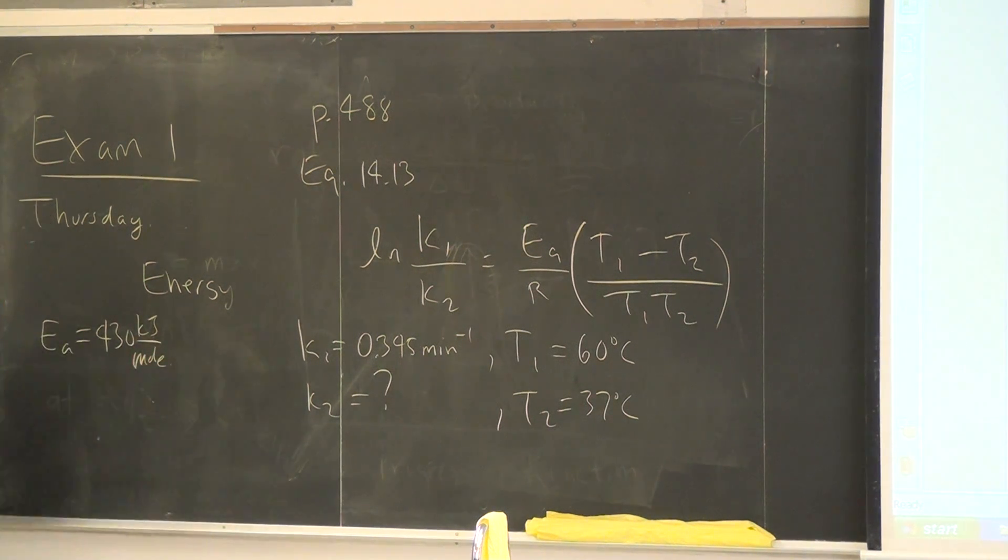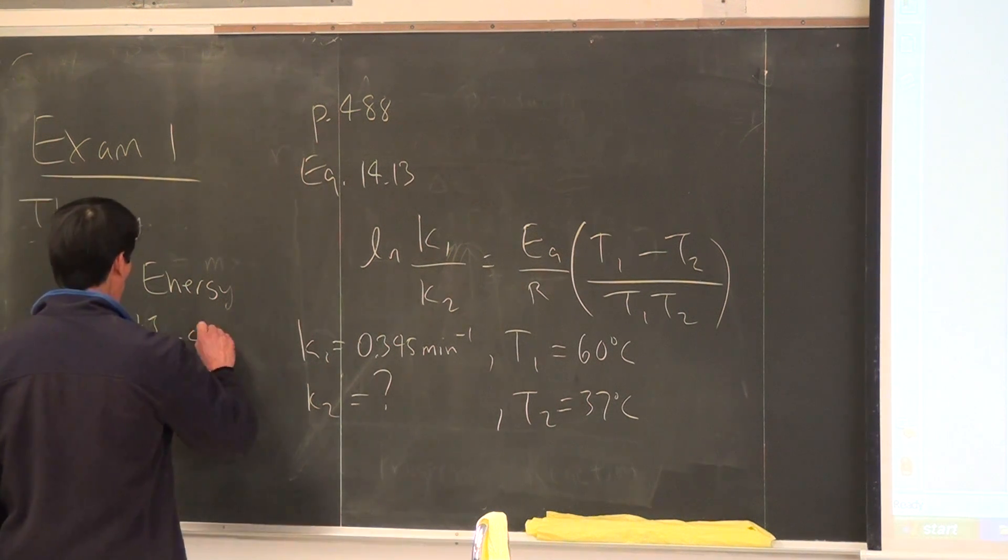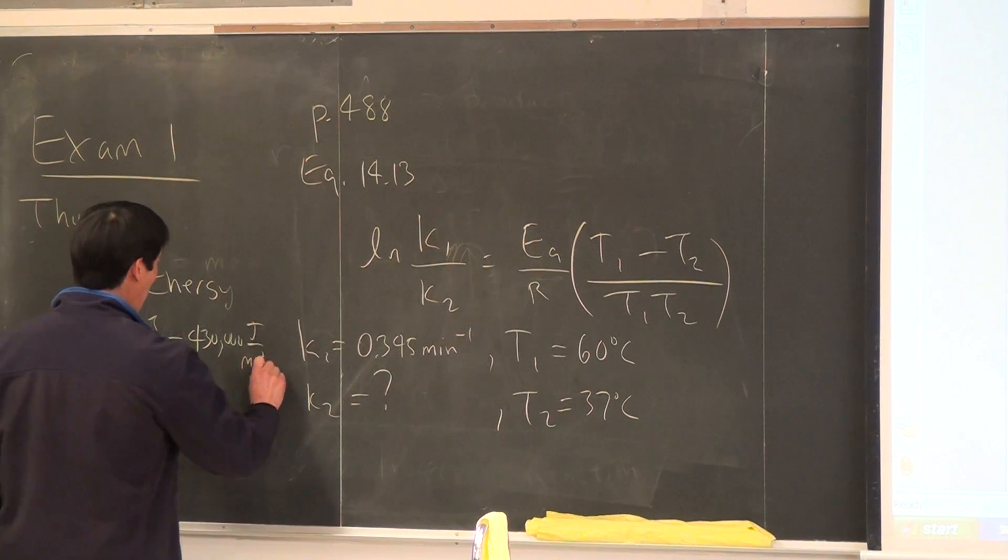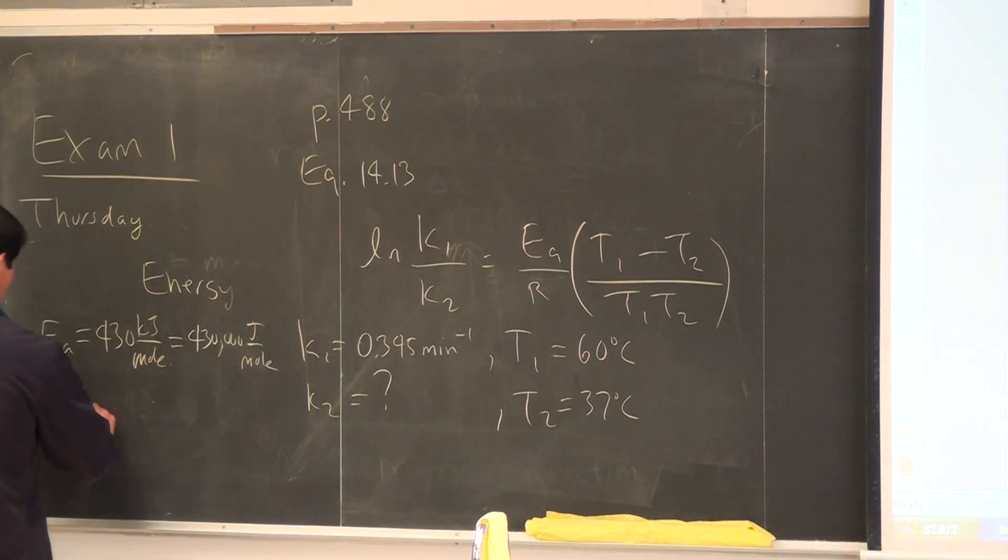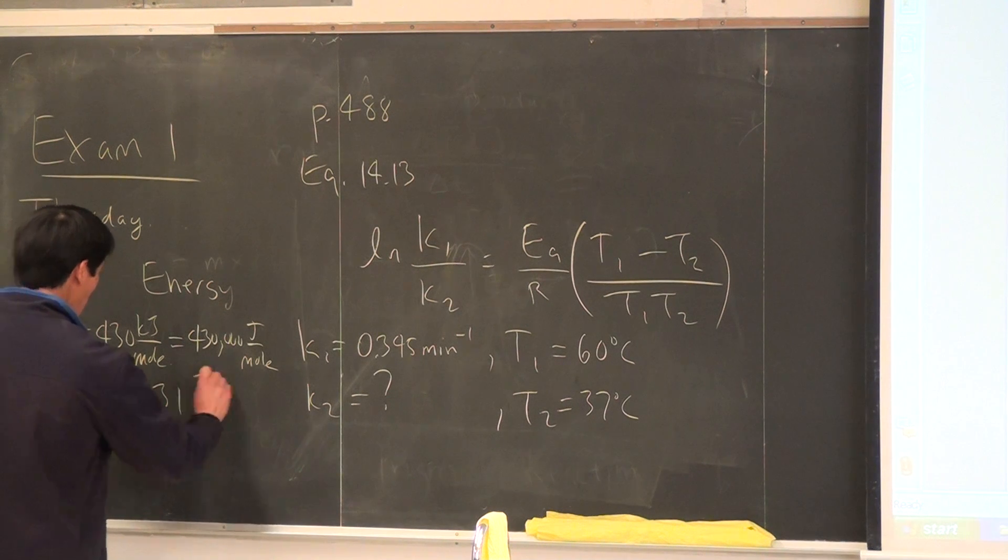EA is 430 kilojoules per mole. Does that have to be converted? Yeah, we have to convert this to joules. So, make this 430,000 joules per mole. And for the gas constant R, we'll use this one, 8.31 joules per mole per degree Kelvin.